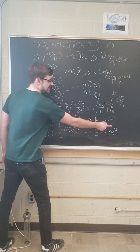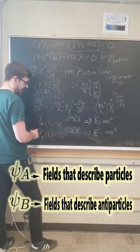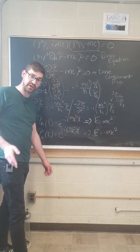What is that energy? E equals mc squared for psi a and equals minus mc squared for psi b.